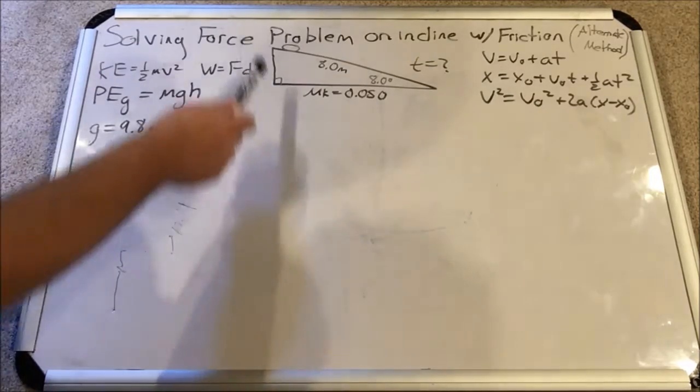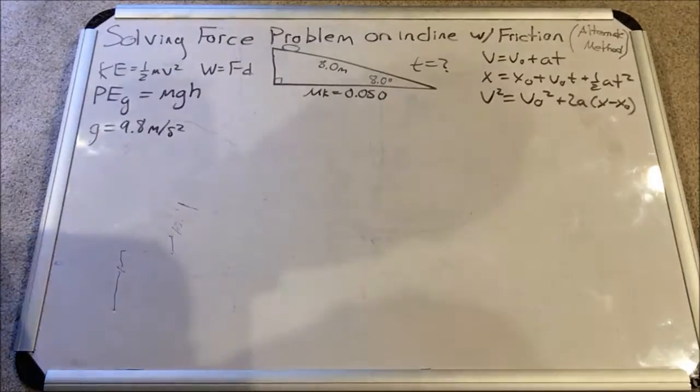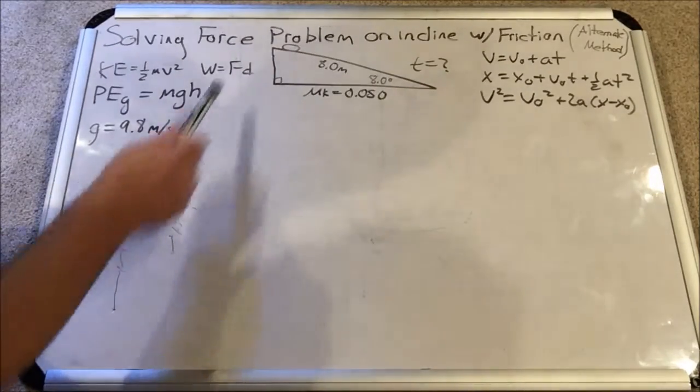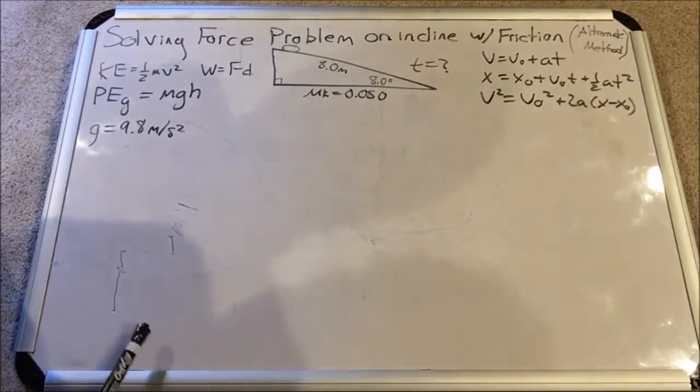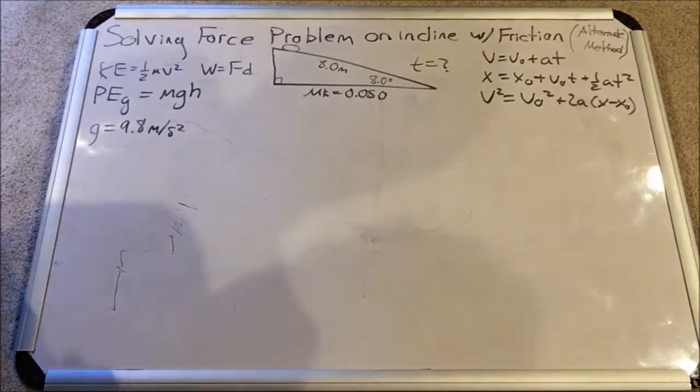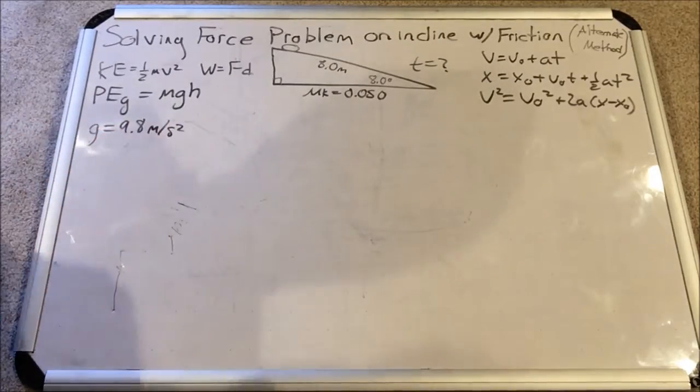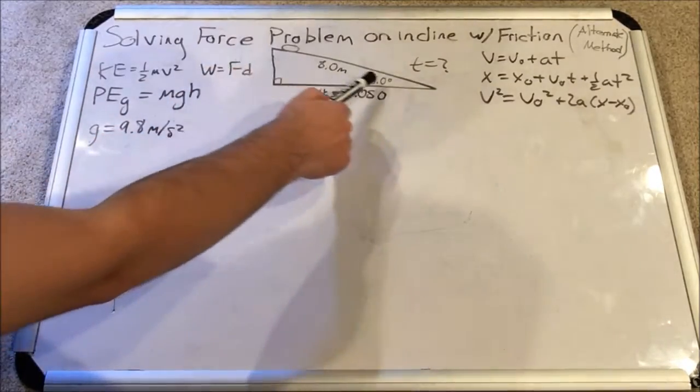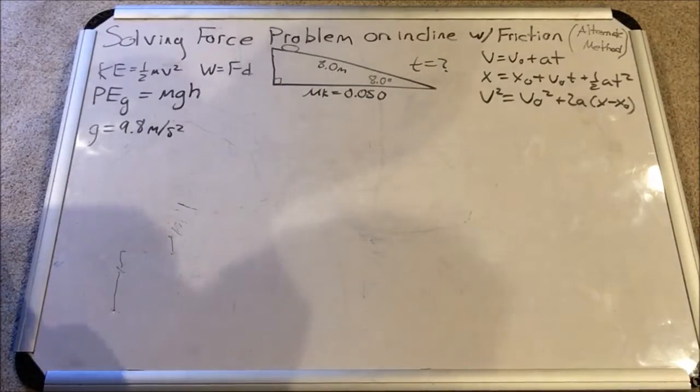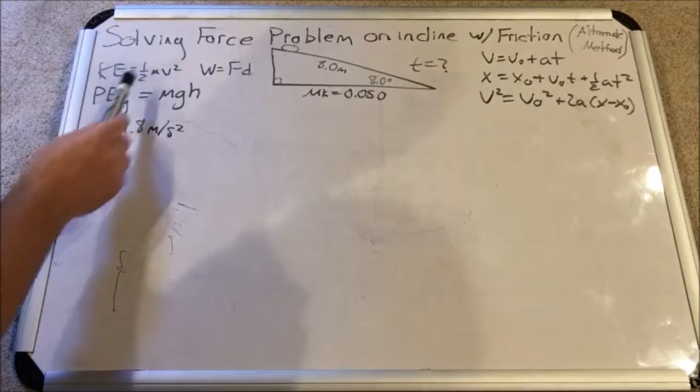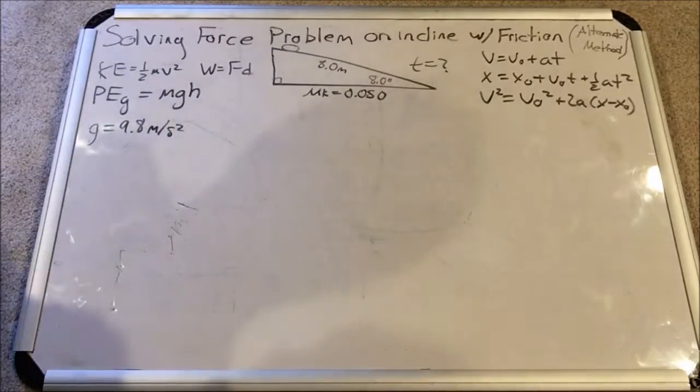This time we're going to make use of energy conservation. I want you to understand that the soap is released from rest at this height, which we need to calculate. What type of energy does it have? Well, it has gravitational potential energy, mgh. As the soap travels down the ramp, it gains speed because it accelerates, and it eventually has some kinetic energy equal to one half mv squared at the bottom.